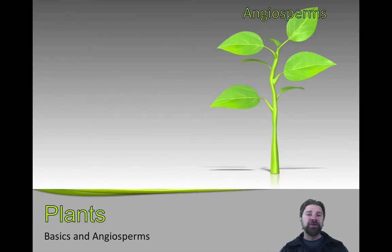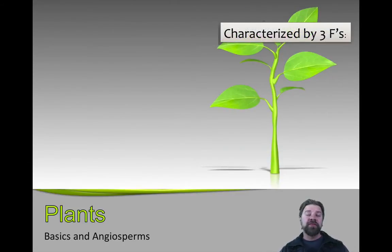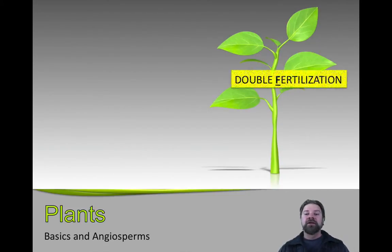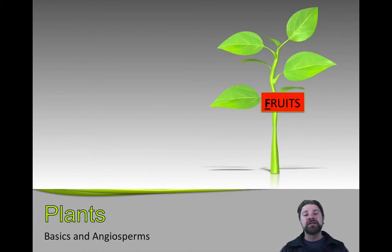If we break down the angiosperm group into three defining characteristics, what we're going to see are three F's. The first F is flowers - they are the flowering plants. Second, they go through what's called double fertilization when they reproduce. And the third F is fruits. Let's go ahead and first start looking at the basics of the plant kingdom, then we'll transition into the angiosperms.